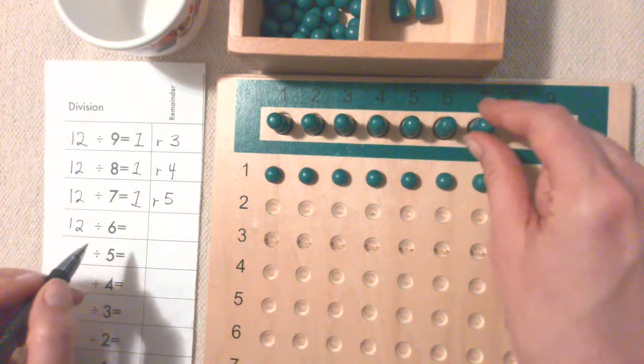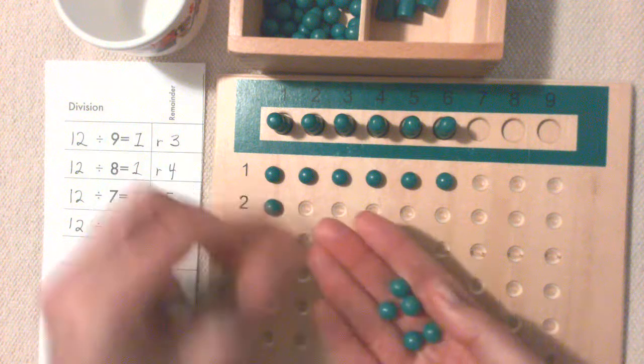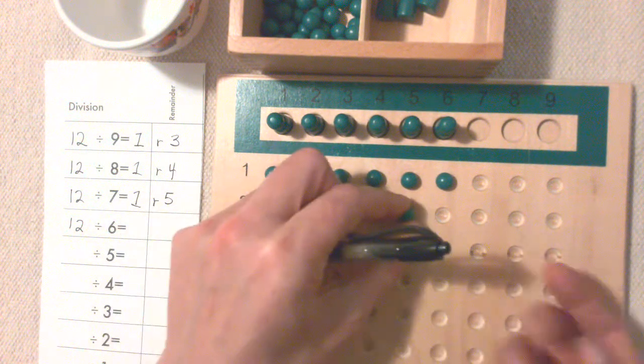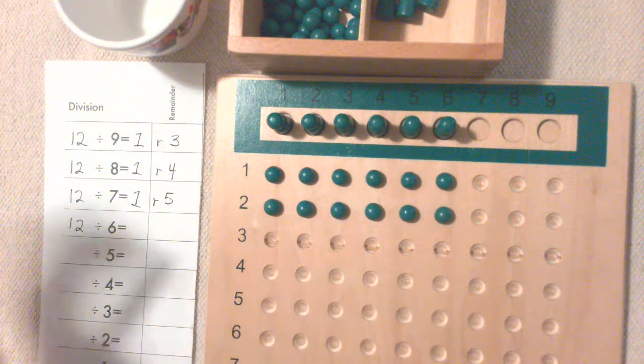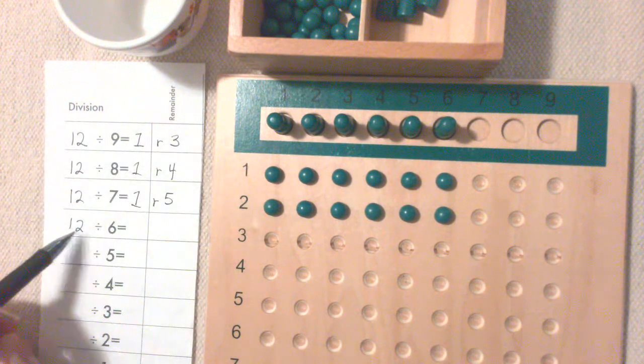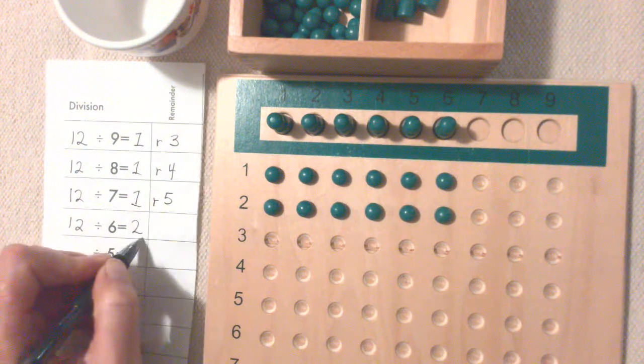12 divided by 6, we'll take one Skittle away and redistribute our beads. Oh, this time each Skittle got two. 12 divided by 6 equals two, and there's no remainders.